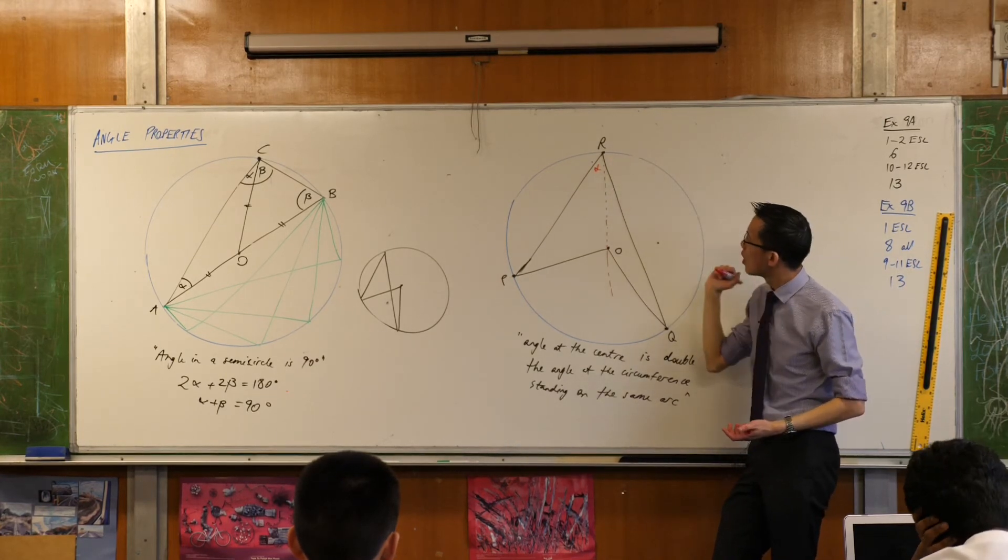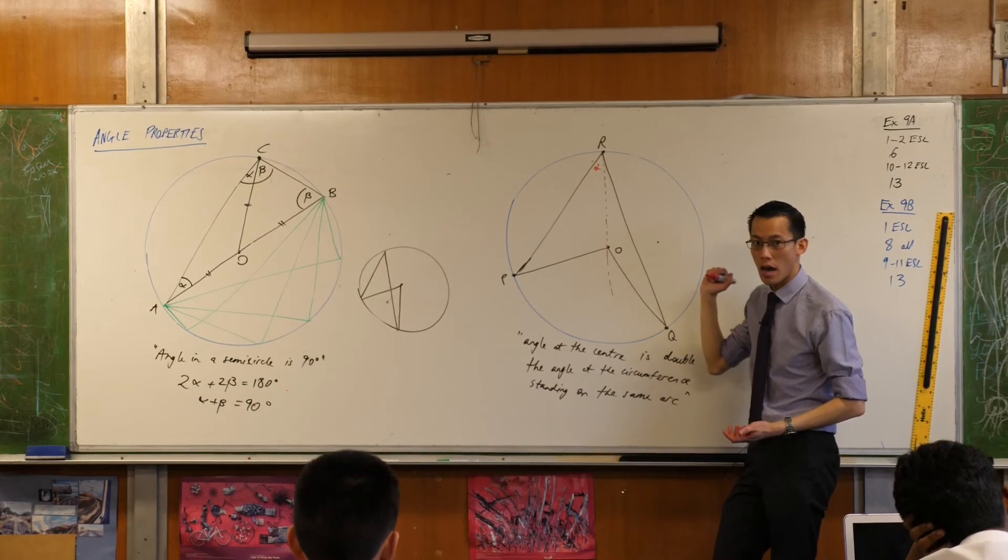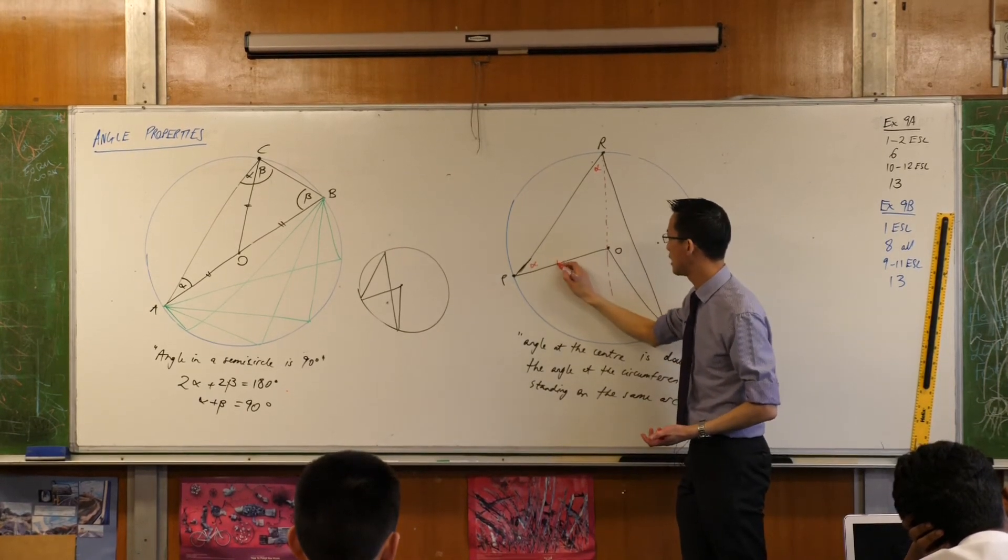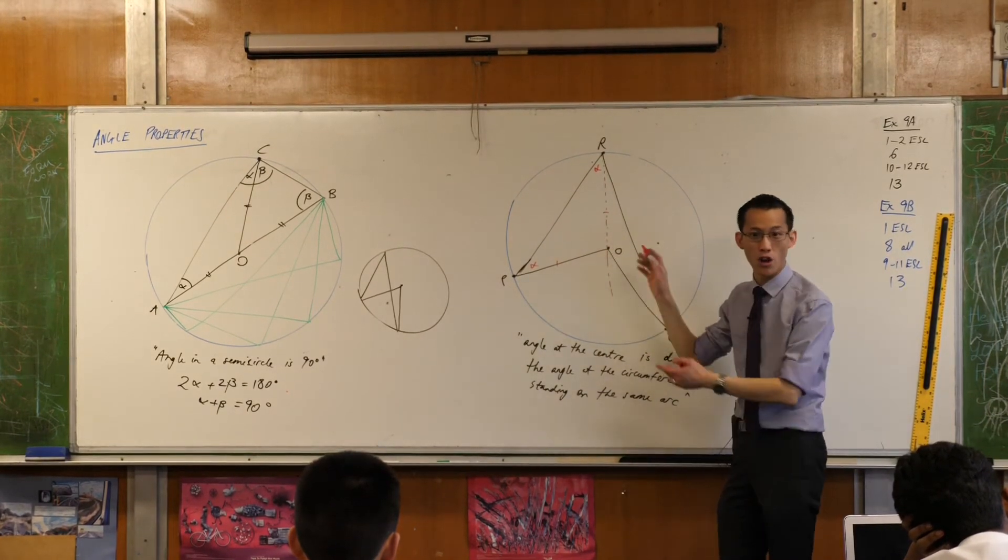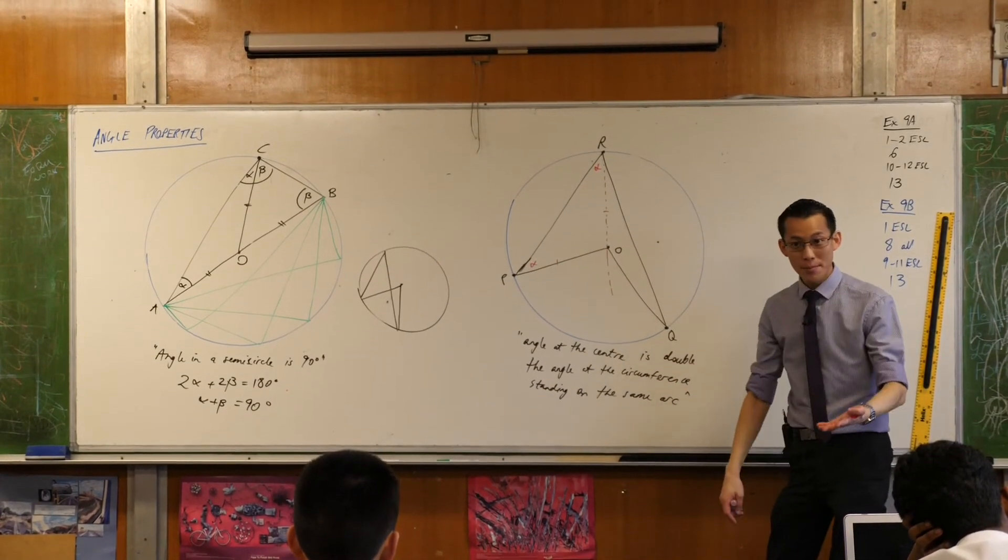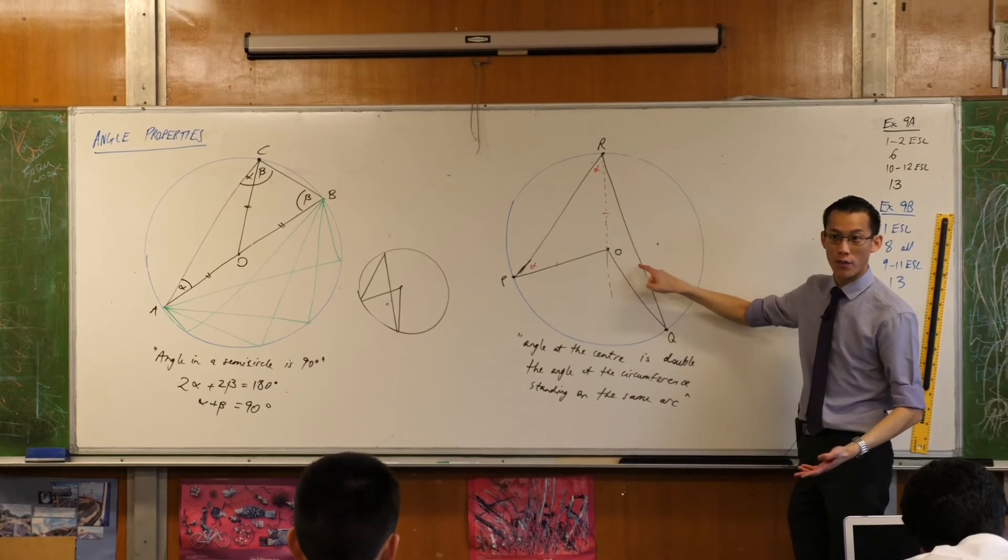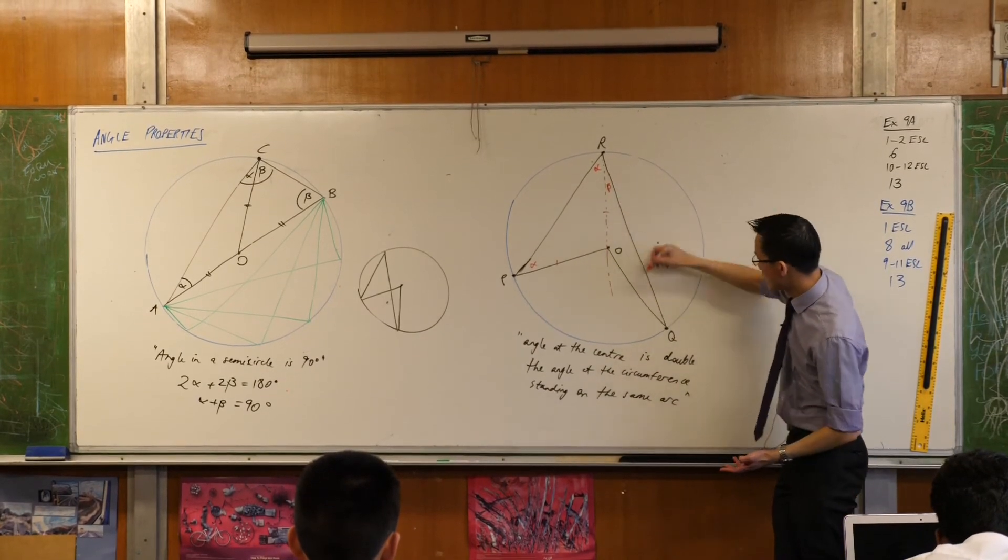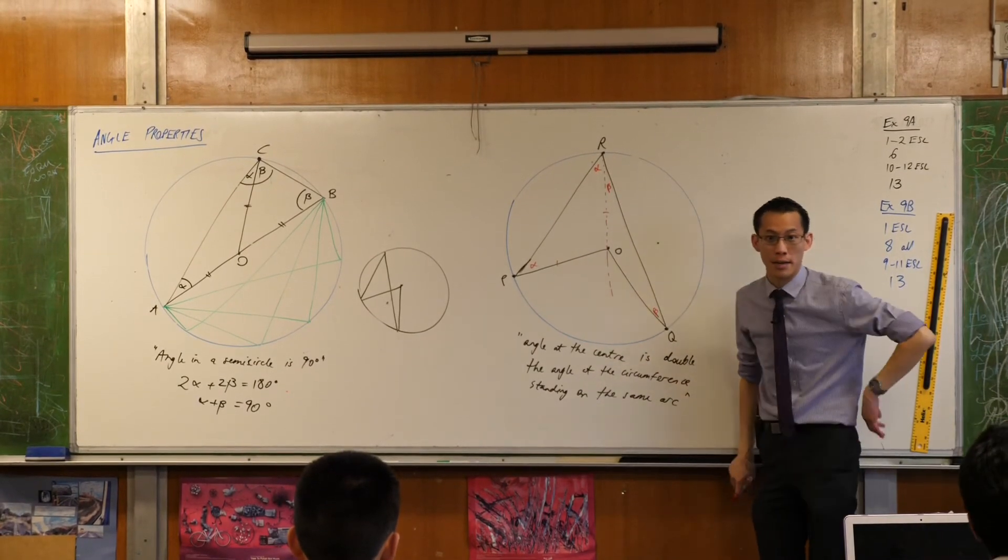RPO, right? Because here are the radii. And so equal angles are opposite equal sides. Yep. By the same logic, I can look at this thin triangle over here, and if this is beta, then this guy down here is also beta. Okay?